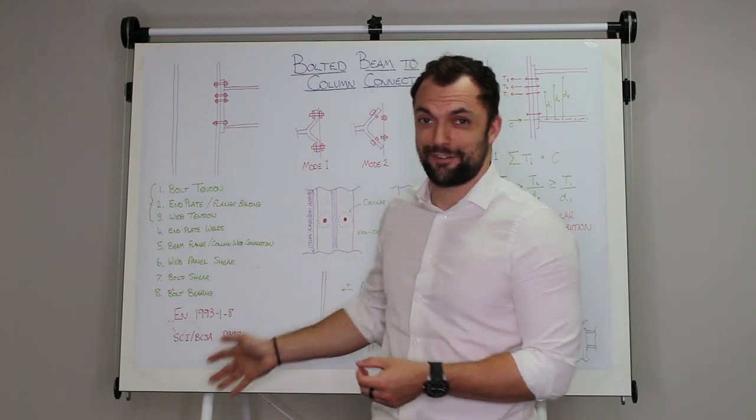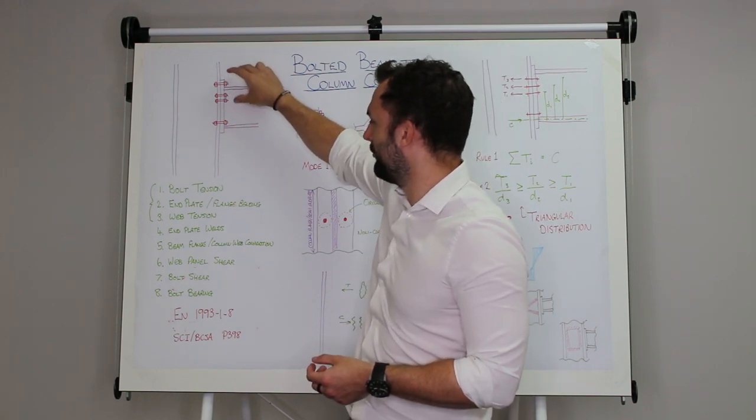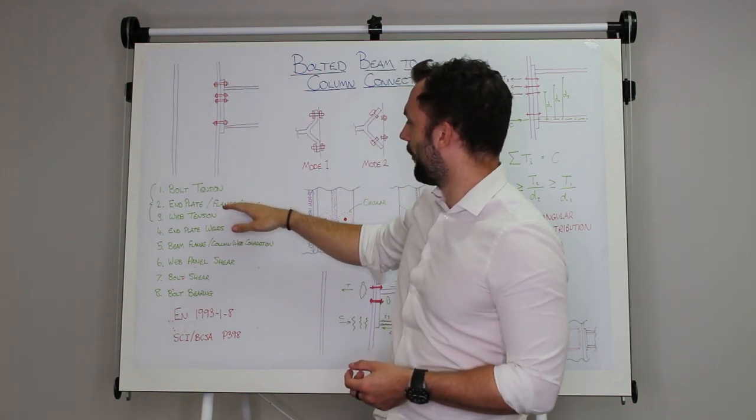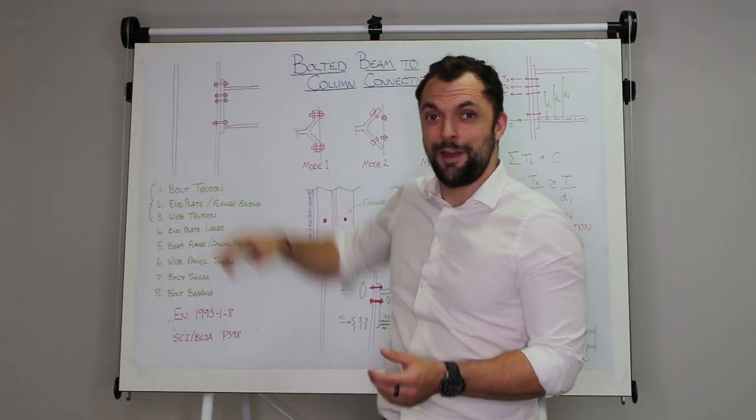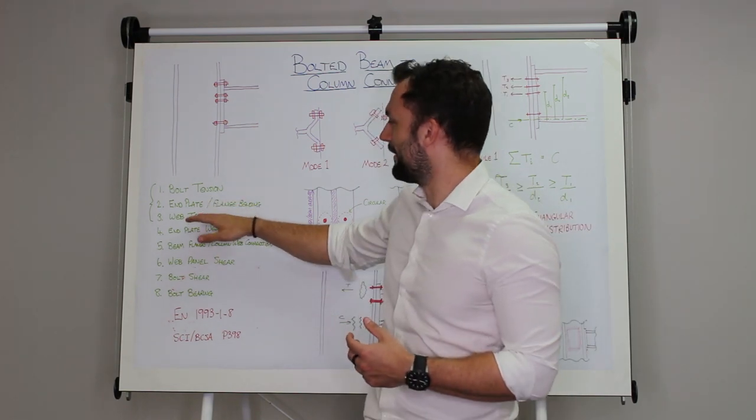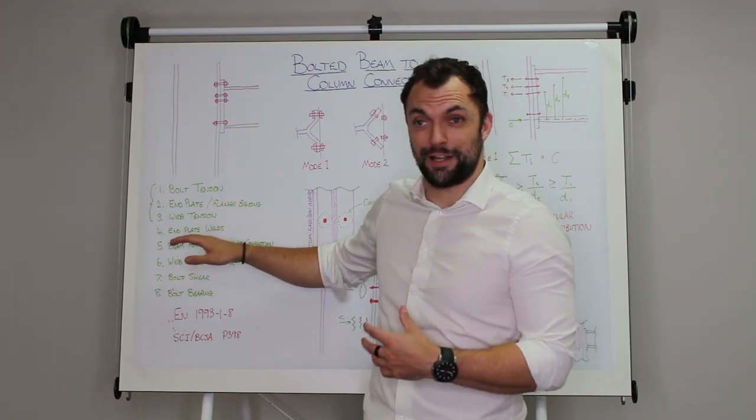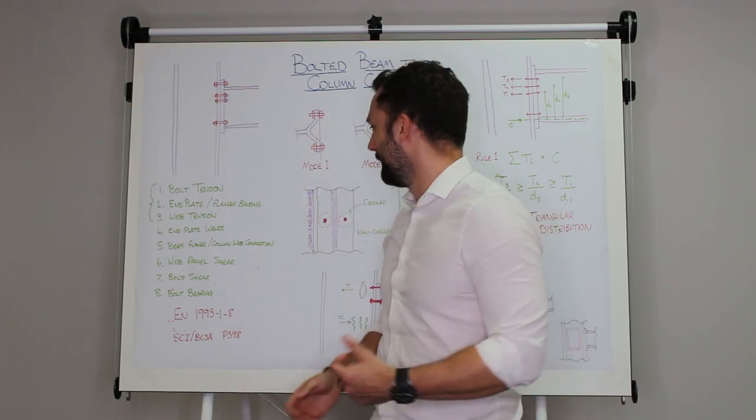So we're going to go through a quick short list of these. For instance, bolt tension - the bolts at the top will be in tension. The end plate or the flange, so the end plate attached to the beam or the flange attached to this column here, they may actually bend with the tension. You're looking at the tension in the web as well, so behind that flange or end plate you may tear the web here and here, so you've got to check the strength of that web as well.